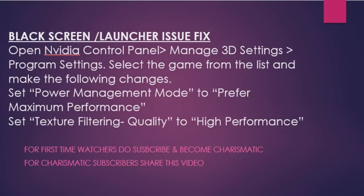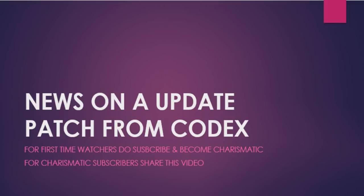Now let's move on to the black screen or launcher issue fix. This is a fix that has definitely worked on my system too. If you have an Nvidia graphics card, go to the Nvidia Control Panel, go to Manage 3D Settings, and set the power management mode to 'Prefer Maximum Performance' so your game gets maximum performance. Also, make sure you install and play one game at a time, because if you install multiple games the power distribution gets divided and your game can run into trouble. You can also set the texture filtering to high performance so all your resources are fully dedicated to the game.